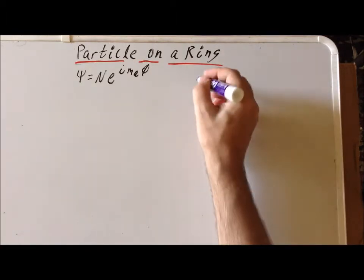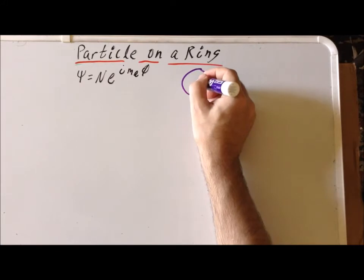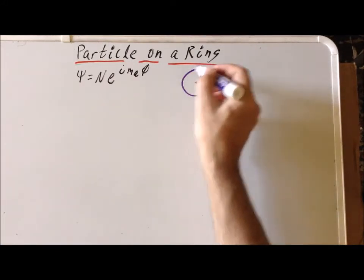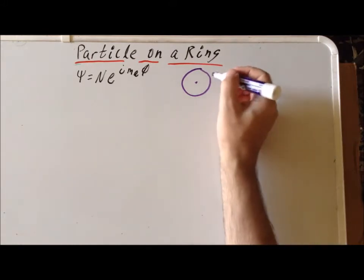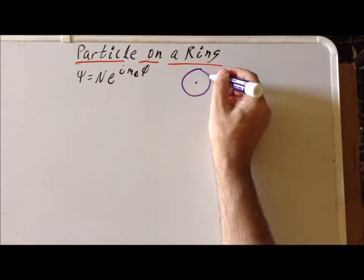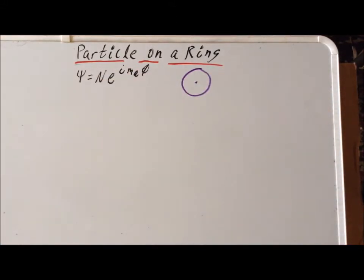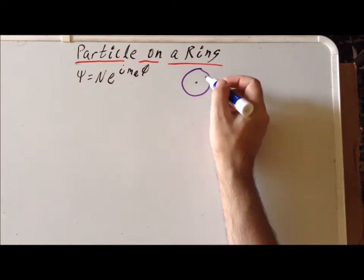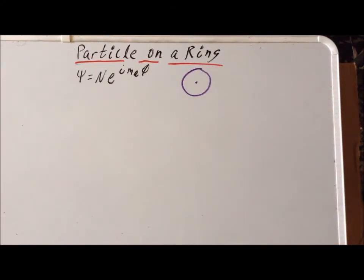One thing we realize for the particle on a ring system is that each time the particle travels one full revolution, it's back to the exact same location that it was before. And each time it comes back to that same point, the wave function has to have the exact same value because the wave function has to be single valued. We can only have one and only one value for the wave function at any particular point in space. Otherwise, the probability wouldn't make any sense in terms of the Born interpretation. So therefore, this tells us that we have a cyclic boundary condition.